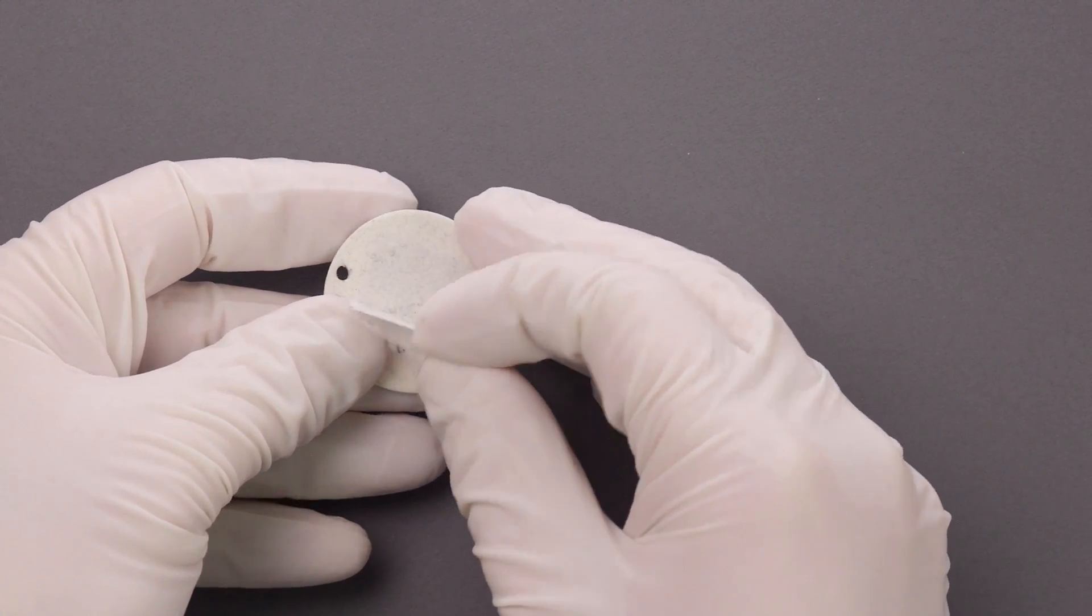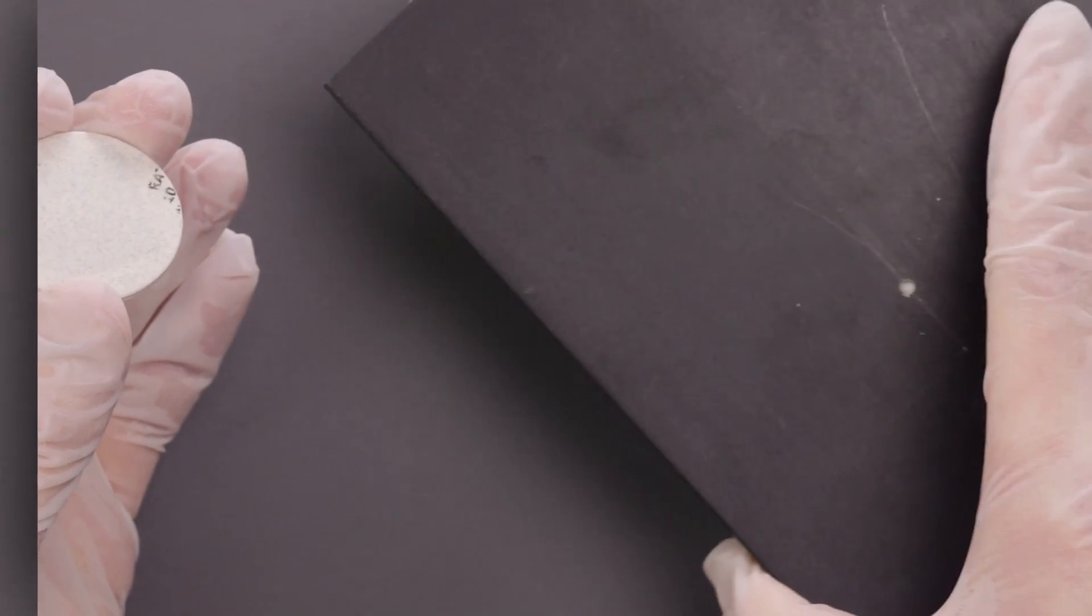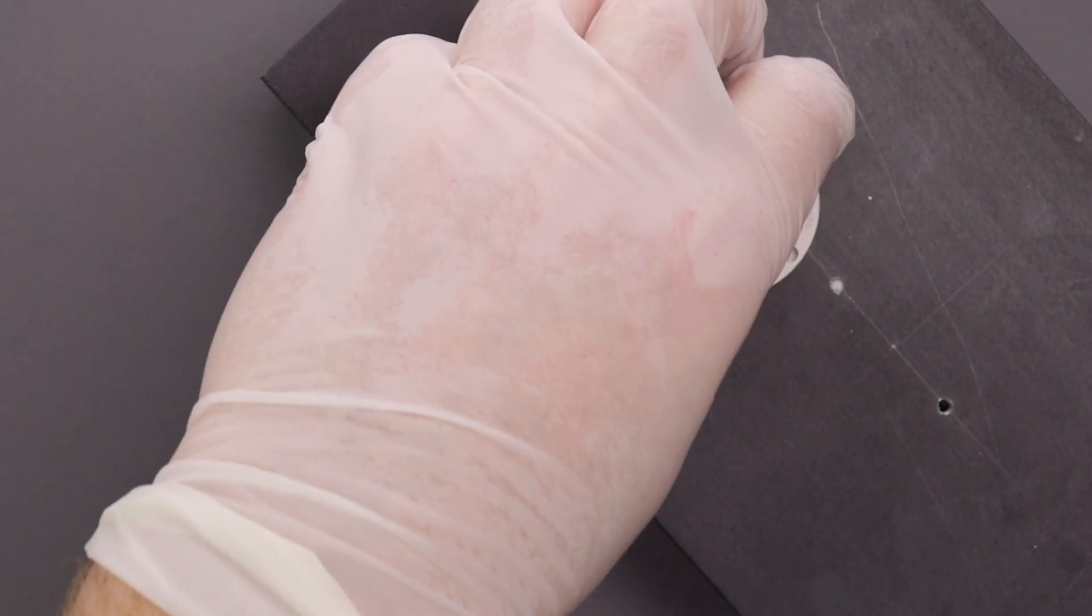Next, remove the protective liner from the other side and apply to the heat sink. Use a light, even pressure and be certain not to press down on the LES.